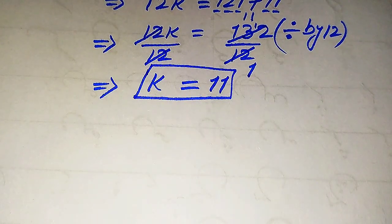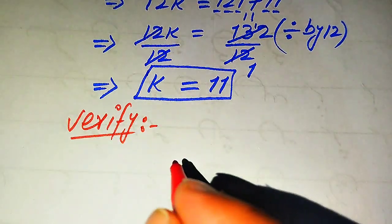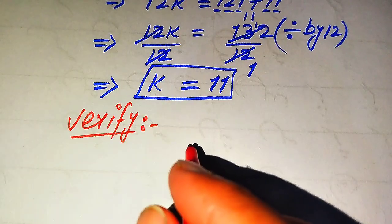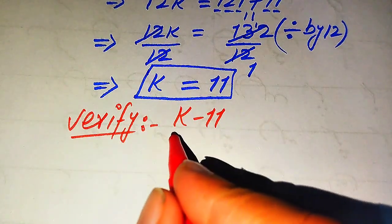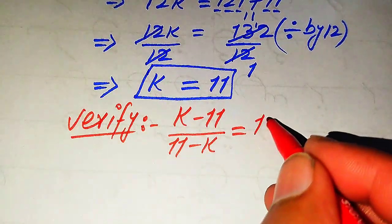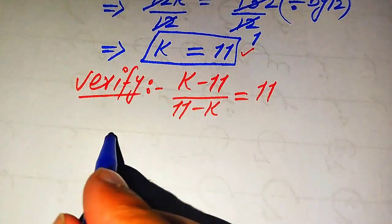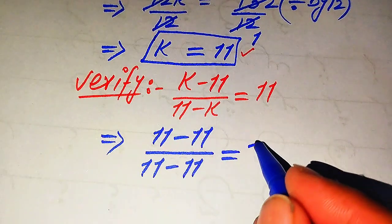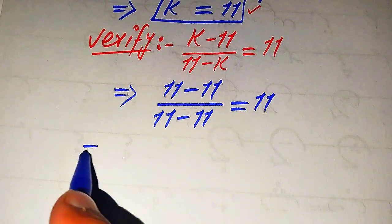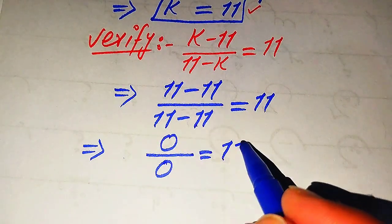Now we verify whether k equals 11 satisfies the original equation or is an extraneous root. We substitute k equals 11 into the left-hand side: (11 minus 11) divided by (11 minus 11) equals 11. This gives 0 divided by 0 on the left-hand side.